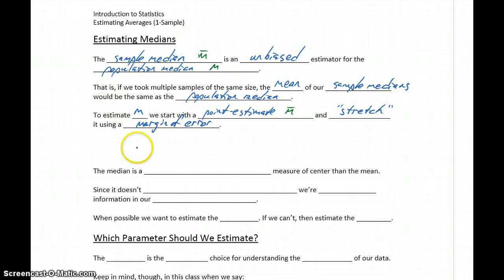So we'll take our sample median and add and subtract some margin of error, or we can report that as our lower limit, comma the upper limit, so we'll end up with that range of values in interval notation.